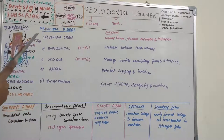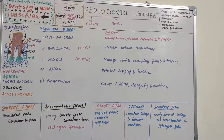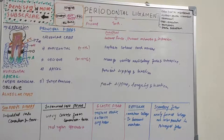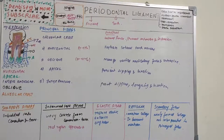Sharpey's fibers are collagen bundles of the periodontal ligament embedded into cementum and alveolar bone. Their orientation is similar to adjacent periodontal ligament bundles; they are more numerous but smaller at their attachment into cementum than into alveolar bone. In acellular cementum they are fully mineralized, but in cellular cementum they are partially mineralized. Some Sharpey's fibers pass uninterruptedly through the bone of the alveolar process, known as trans-alveolar fibers.